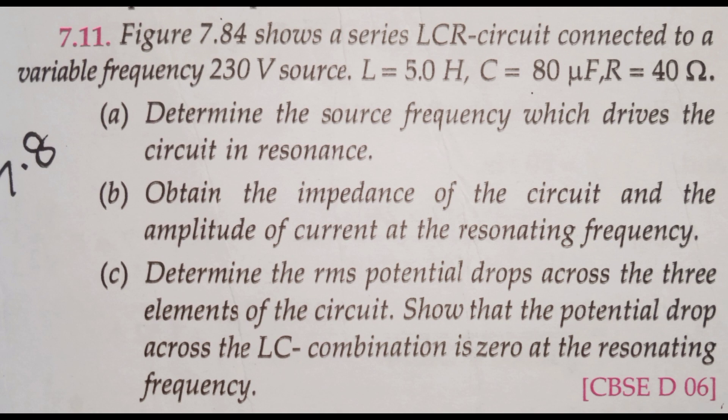A series LCR circuit is connected to a variable frequency 230V source, where L is equal to 5 Henry, C is equal to 80 microfarad, and R is equal to 40 Ohm. Part A: Determine the source frequency which drives the circuit in resonance. Part B: Obtain the impedance of the circuit and amplitude of the current at the resonating frequency. Part C: Determine the RMS potential drop across the three elements of the circuit, and show that the potential drop across the LC combination is zero at the resonating frequency.